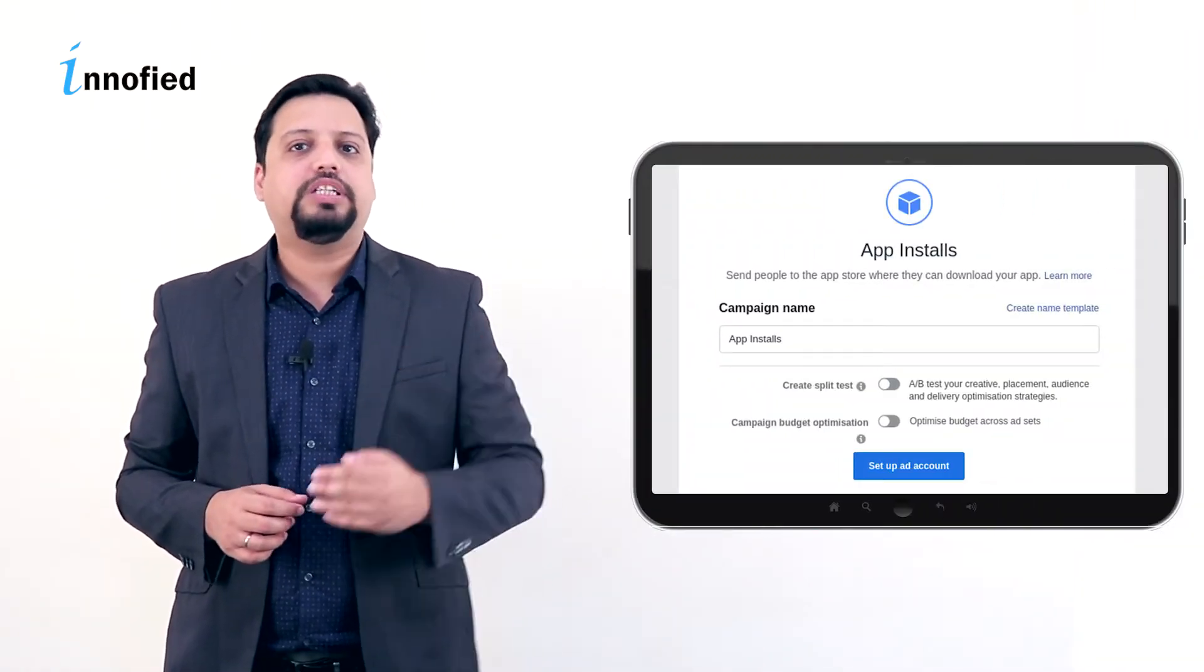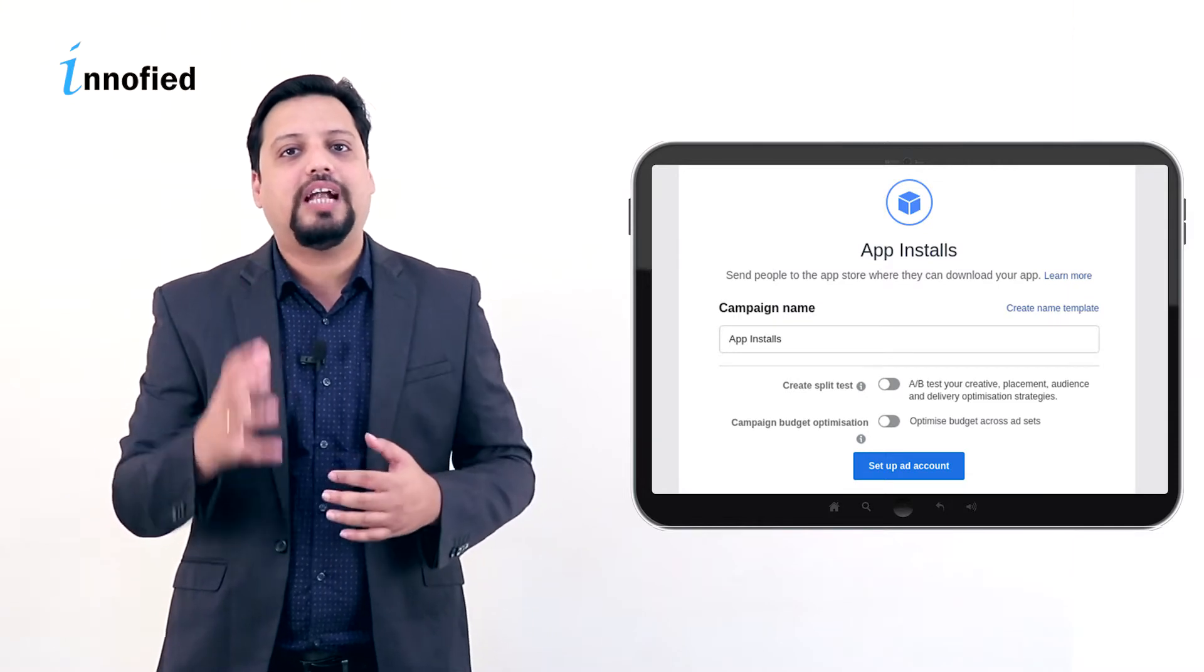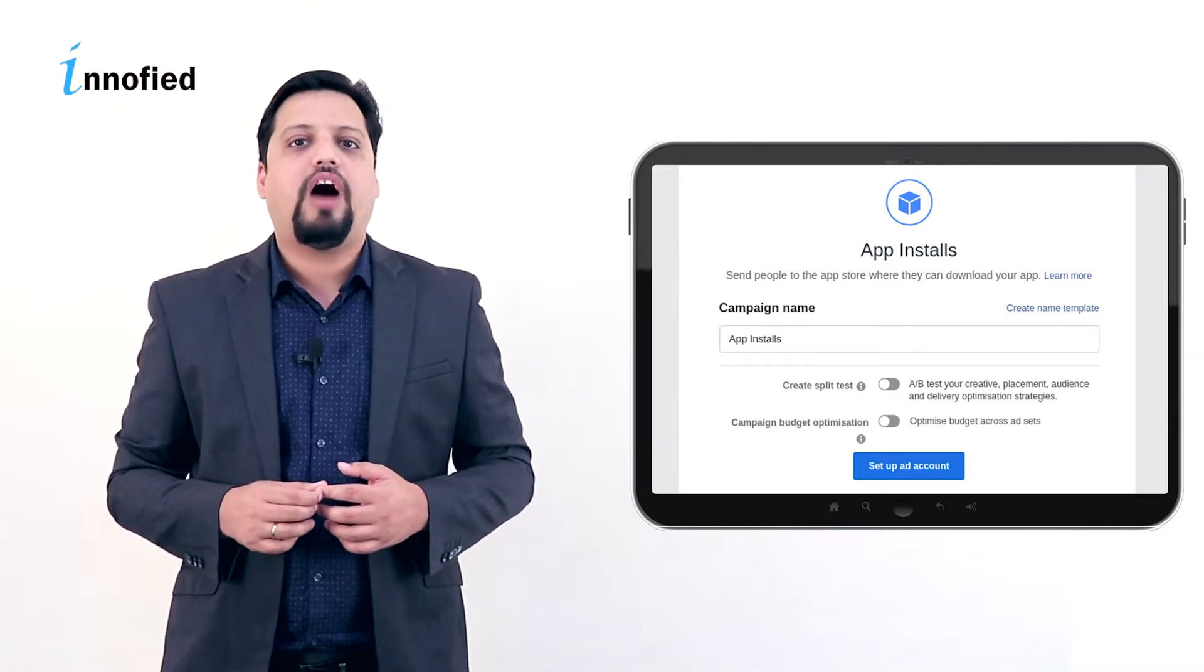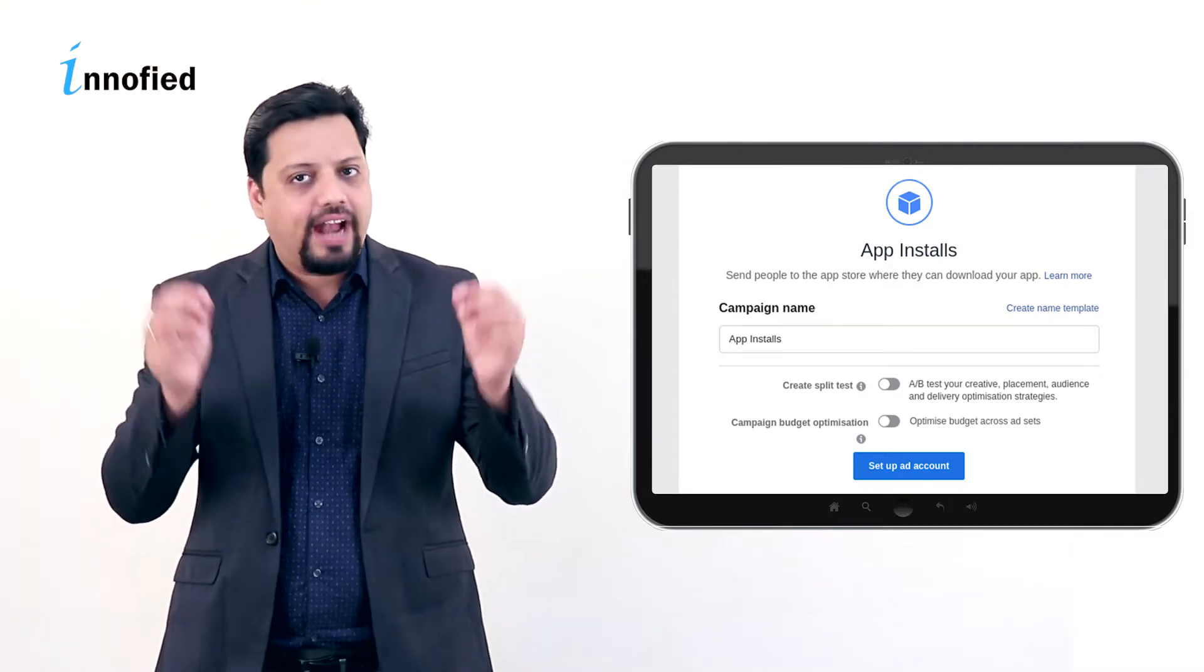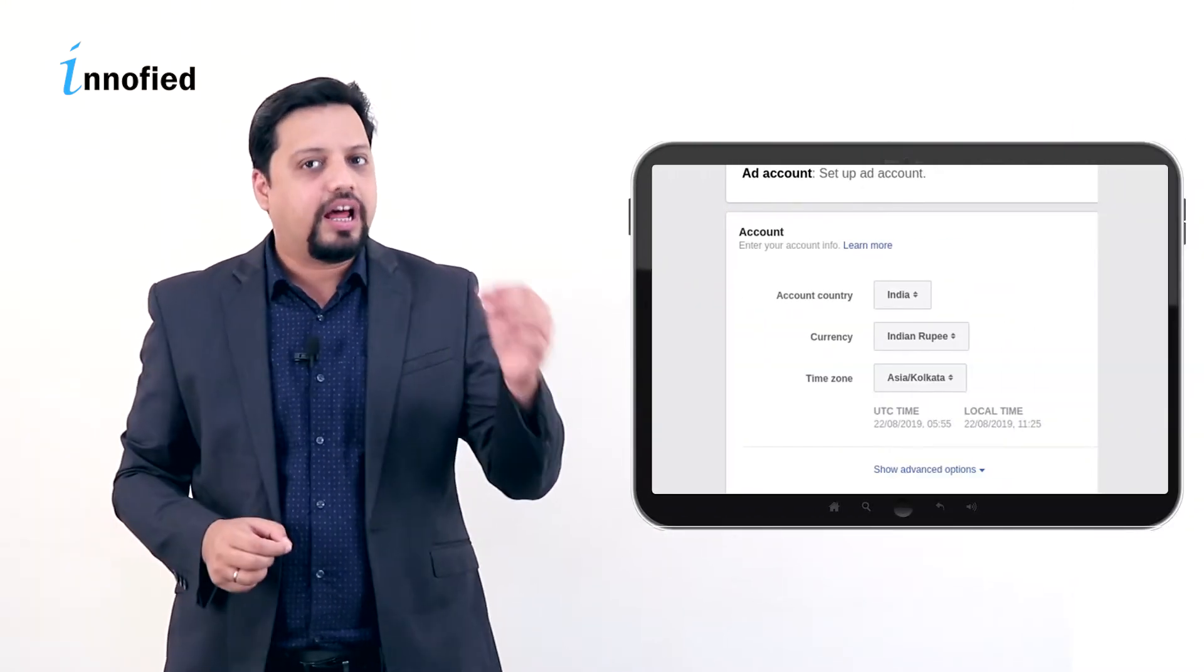Next, you need to select the type of campaign and set up an ad account. After you have selected app installs section, the next thing you get to see on your screen is request to set up an ad account. After you click on set up an ad account, you will need to select the country, currency and time zone.